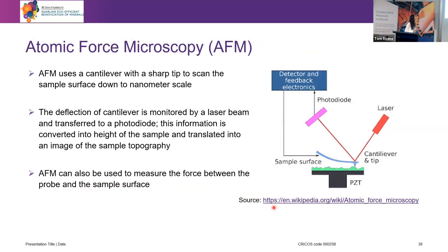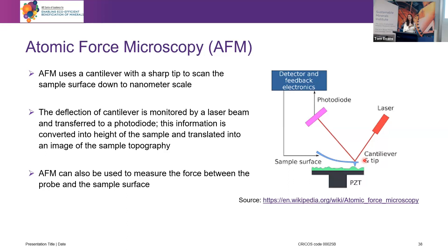Another interesting technique is Atomic Force Microscopy. This technique uses a cantilever with a tip at its end. There is a laser beam pointing at the cantilever, and as the cantilever moves over the surface and feels it, it deflects the light. That deflection is then converted into an image of the topography of the sample — we can actually see all the bumps and the roughness on the surface and quantify that roughness.